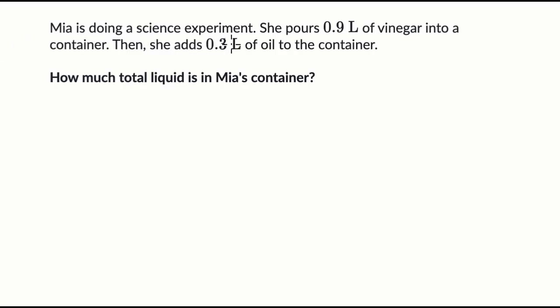We're told Mia is doing a science experiment. She pours 9 tenths liter of vinegar into a container. Then she adds 3 tenths of a liter of oil to the container. How much total liquid is in Mia's container? Pause this video and try to figure that out.